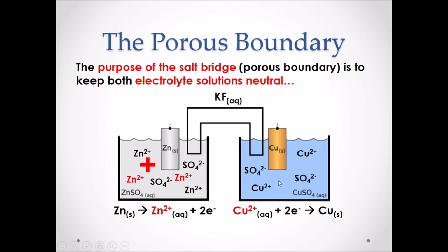Over time in the cathode beaker, we are removing Cu²⁺ ions from the solution because they are gaining electrons and forming copper solid. So over time, only SO₄²⁻ remains in the solution, making it more negative. The salt bridge neutralizes both solutions. In the salt bridge we can have any soluble ionic salt — in this case, potassium fluoride, which in solution is K⁺ ions and F⁻ ions. Since the anode solution is more positive, the negative anions (F⁻) flow toward it to neutralize it. Since the cathode solution is becoming more negative, the positive cations (K⁺) flow toward it to neutralize it.